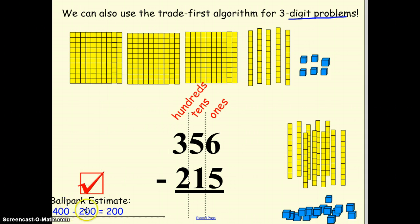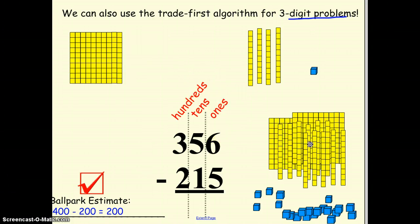Let me delete this block here so we can see this clearly. Now the nice thing with this one, I don't really need to do any trading at all, because all my top numbers are bigger than the bottom numbers. I have 6 ones, bigger than 5 ones, 5 tens, bigger than 1 ten, 300s, bigger than 200s. So now I can just start taking away. So I'm going to start by taking away 5 ones, 5 cubes there, I'm left with 1. I'm going to take away 1 ten, take away there, and I'm going to take away 2 hundreds.